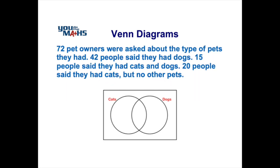Here's our Venn diagram to represent the situation in the question. At the moment there are no numbers in there, but we have drawn two circles to represent the dog owners and cat owners, and the overlap in the middle of the two circles represents those people that own both cats and dogs. Let's have a look at the different parts of the Venn diagram and see what they represent with respect to the question.